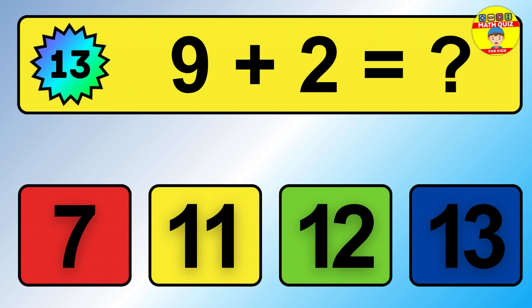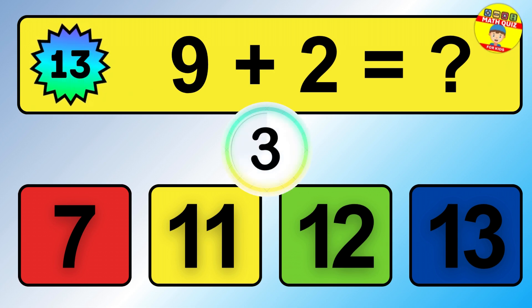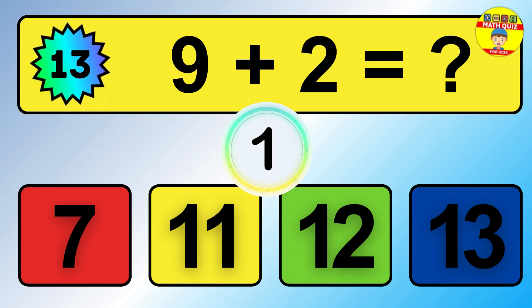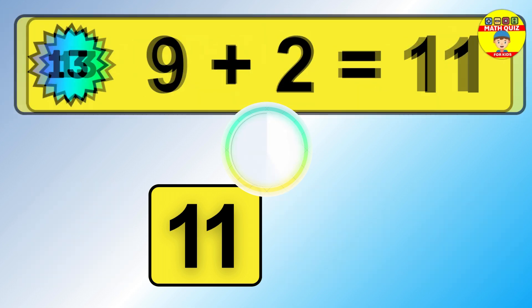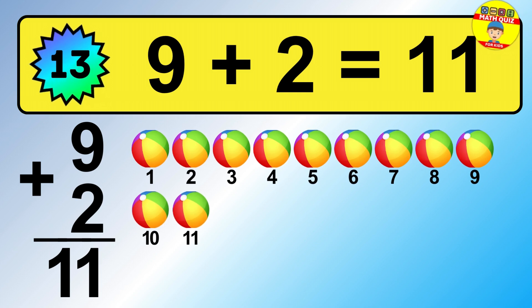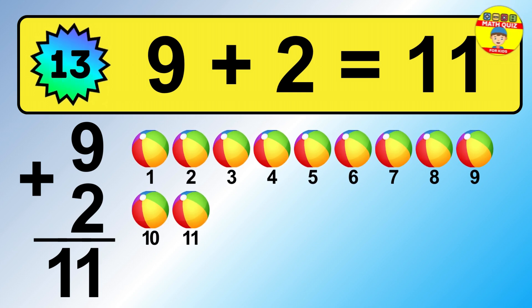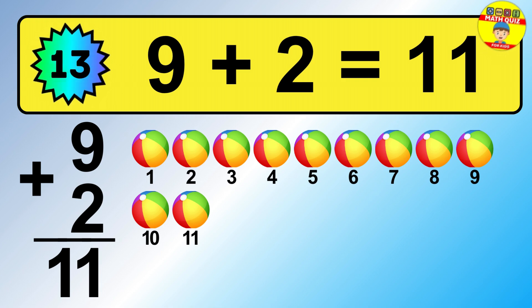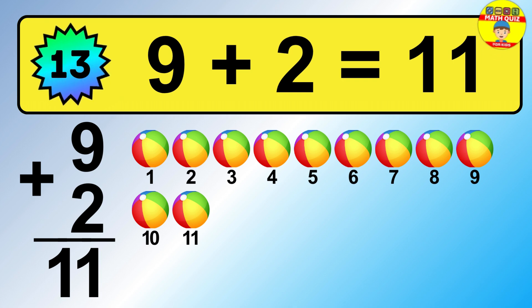Question 13. 9 plus 2 equals what? So the answer is 9 plus 2 is 11. Let's count it: 1, 2, 3, 4, 5, 6, 7, 8, 9, 10, 11.